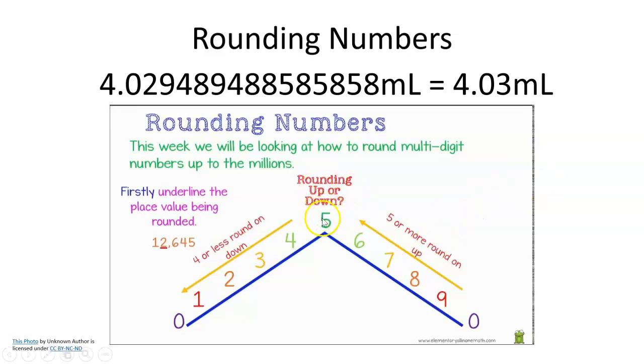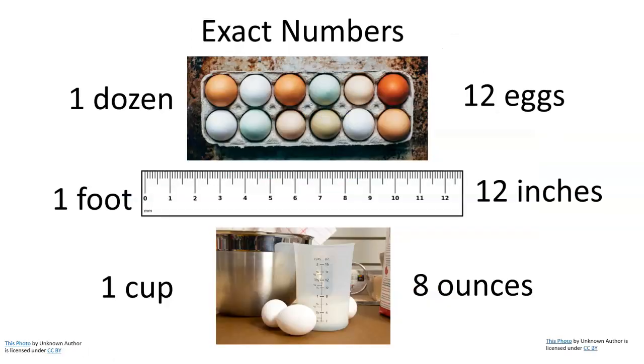So just know that we have five and that's going to be our center. If we are four or less, we're going to round down. And if we are five or more, we're going to round up. So if you are confused about rounding numbers, make sure you reach out and ask those questions.